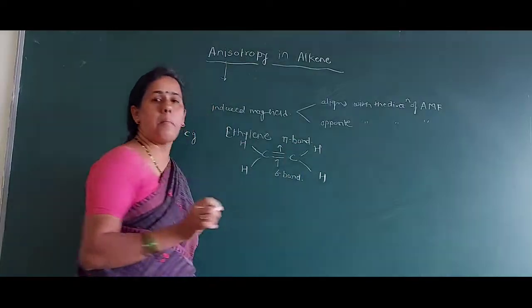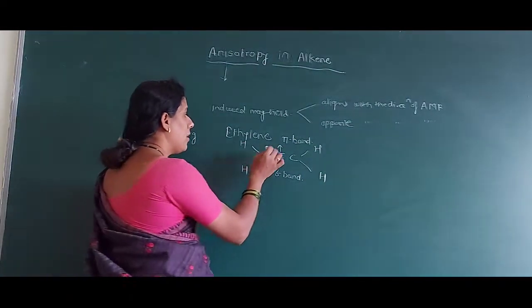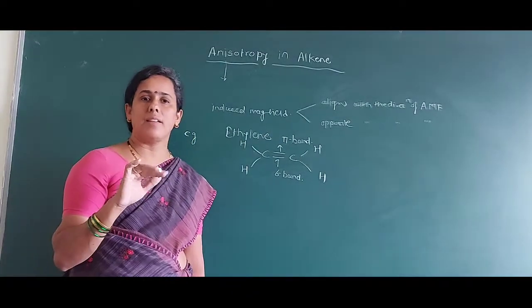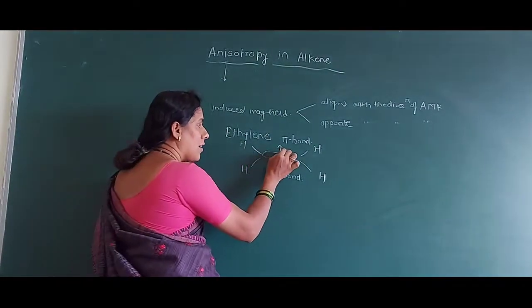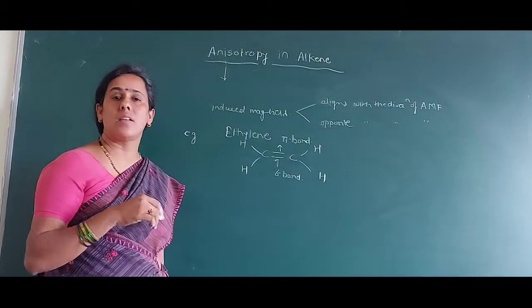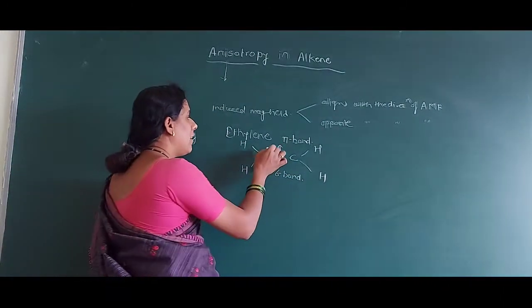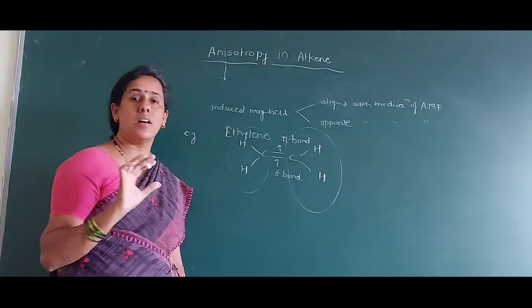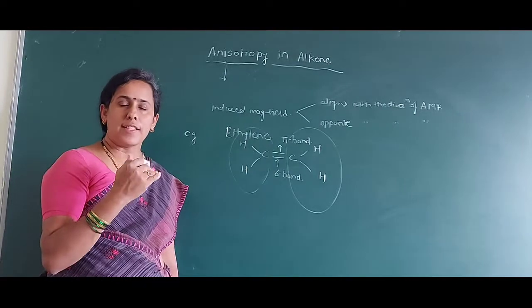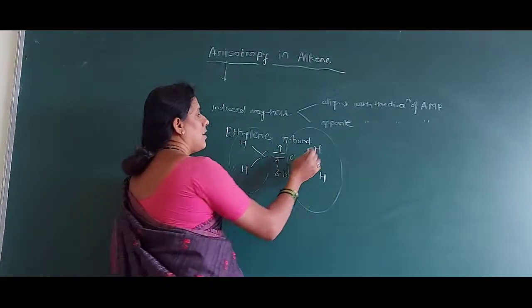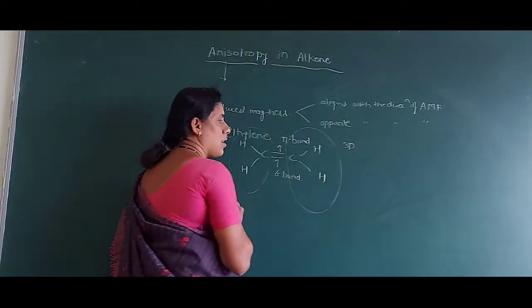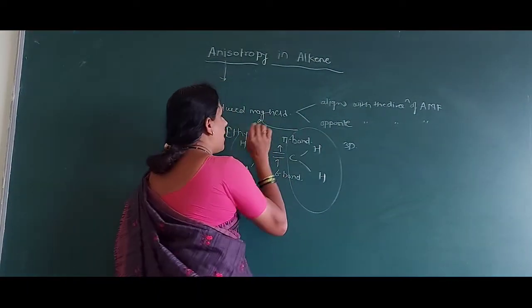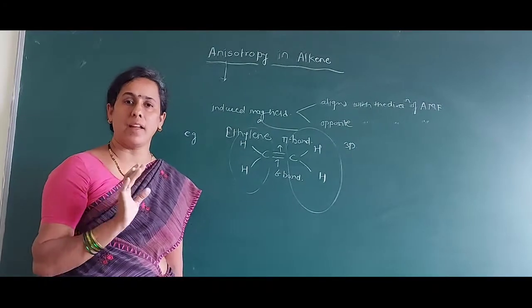Due to the pi bond electrons, they can circulate under certain circumstances — face-to-face and in opposite directions in a circular manner — and they can create their own induced magnetic field.